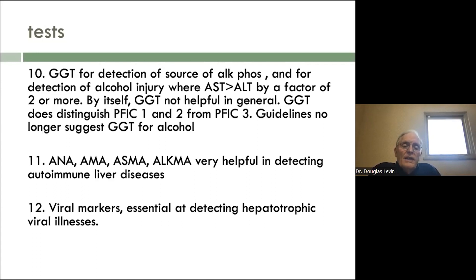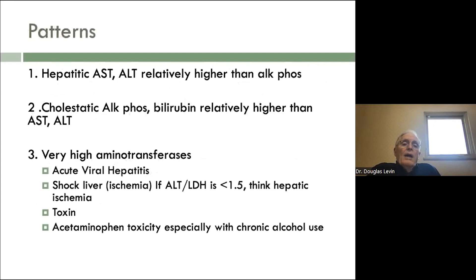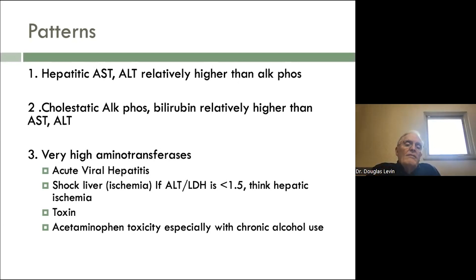The pattern for hepatitis is that AST and ALT are relatively higher than alkaline phosphatase. In cholestatic disease, the alkaline phosphatase and bilirubin are relatively higher than AST and ALT. If you have very high aminotransferases — like 2,000 — you can narrow the differential significantly: one is acute viral hepatitis, another is shock liver. And if the ALT-to-LDH ratio is less than 1.5, think about hepatic ischemia. Somebody with cardiomyopathy who then has a myocardial infarction is a classic setup for ischemia. One of the things about ischemia: as bad as the injury may be, it's generally very reversible if you can correct the cardiovascular system.